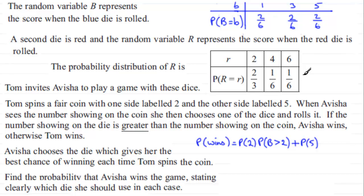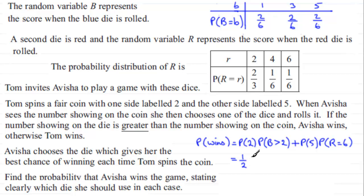She's forced to go for the red one. In other words, she's got to throw a six on the red die in order to win — so that's the probability that red equals six. Now it's just a question of putting the probabilities in. The probability of getting a two on the fair coin is one half. Multiply by the probability of a score more than two on the blue die — that's the three and the five, a total of four sixths. So we do one half times four sixths.